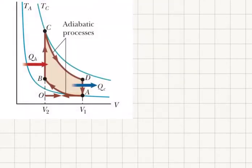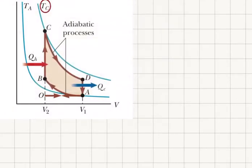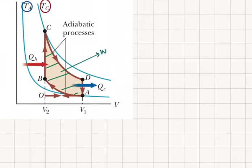Because this isotherm is higher, TC is going to be my hot reservoir temperature and TA is going to be my cold reservoir temperature. So I'm operating between these two temperature extremes. As a result, I have a cyclic process, and therefore the area enclosed by the cycle will give me the work done by the engine — W engine.